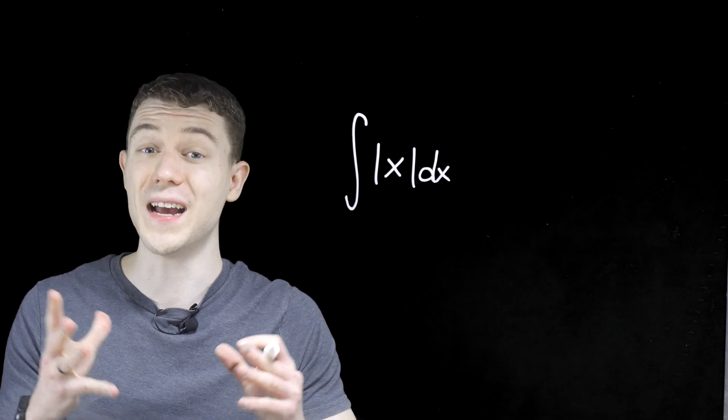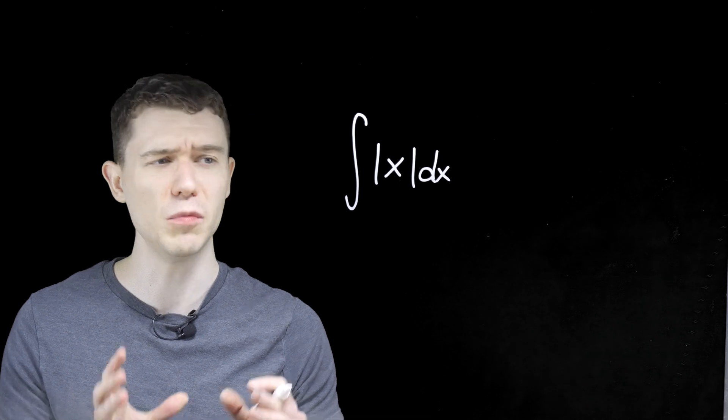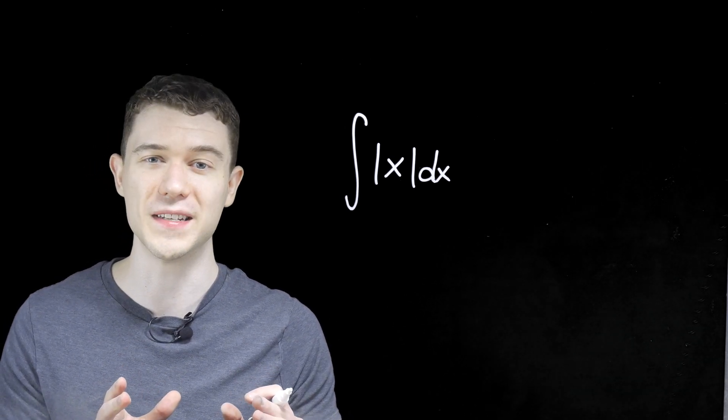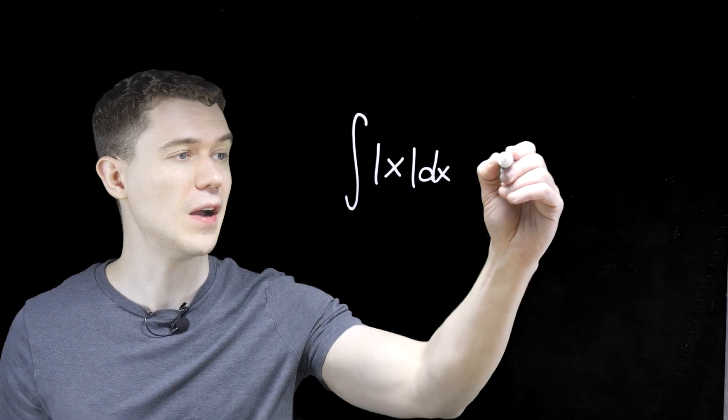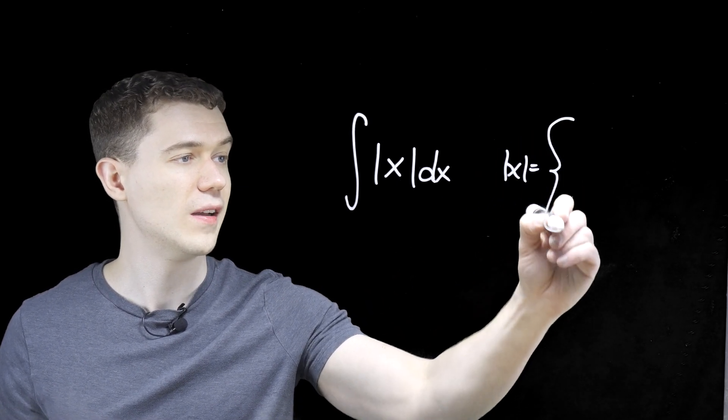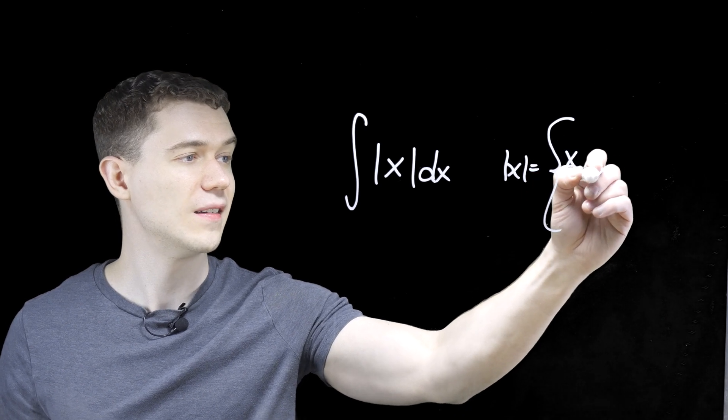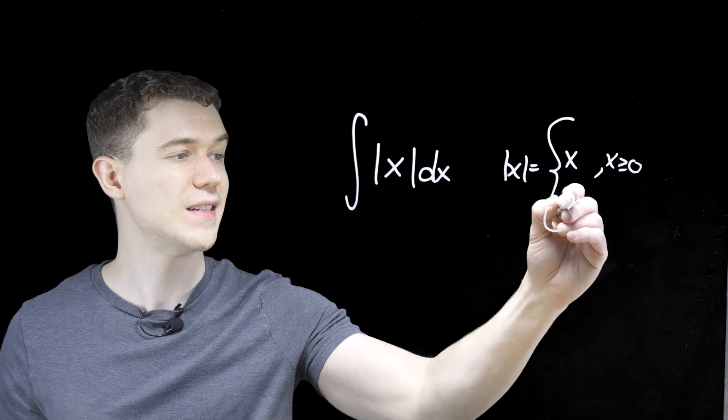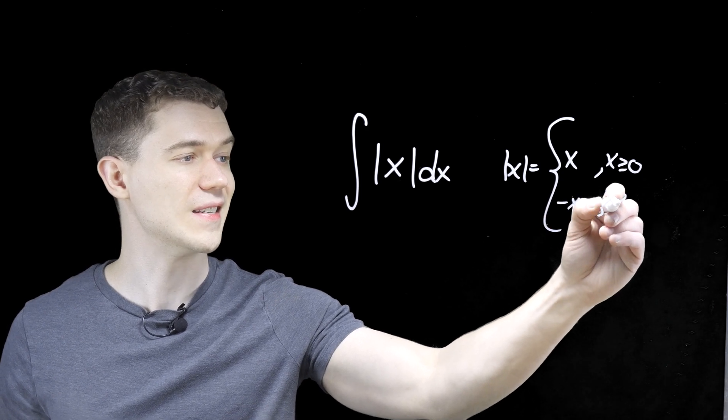But we can actually antiderive it just fine, and we'll do it by writing the absolute value in terms of its piecewise definition. The absolute value of x, what is it really? Well, it's simply x if x is greater than or equal to zero, and it's minus x if x is less than zero.